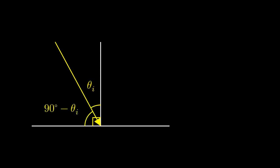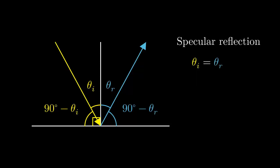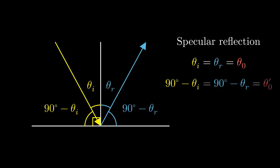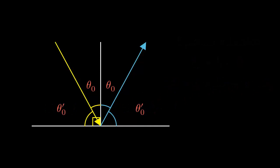Let's see the left-hand side first. The measure of the angle between the normal and surface is 90 degrees. Here is theta i, so this angle is 90 minus theta i. Now the right-hand side: the measure of the angle between the normal and surface is again 90 degrees. Here is theta r, so this angle is 90 minus theta r. Remember, theta i is equal to theta r — I call this theta null. So the relationship between 90 minus theta i and 90 minus theta r is that these angles have the same measure too. I set both of these angles as theta null dash. We now know many angles have the same measure.